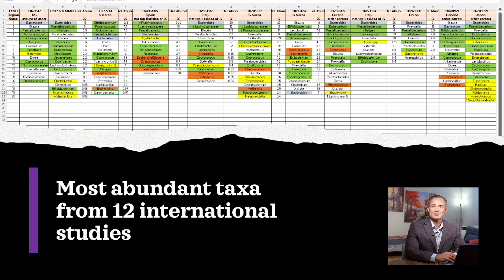The yellow represents taxa which came up only one time as a top taxon within all of these 12 studies. In all of these international studies, Bacteroides was a top taxon in every study, usually at or near number one. So the main players are relatively uniform around the globe.